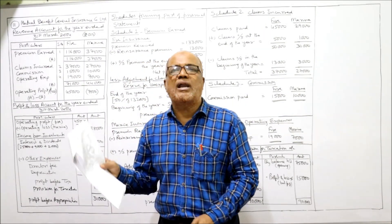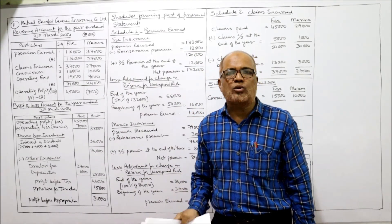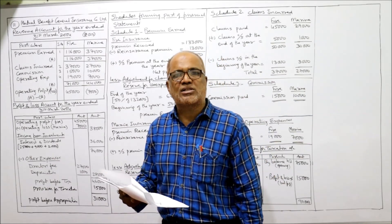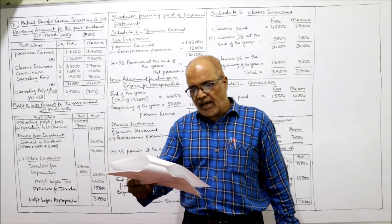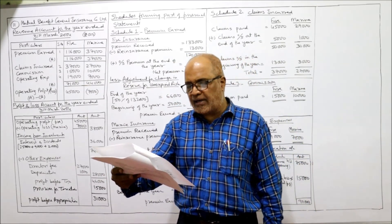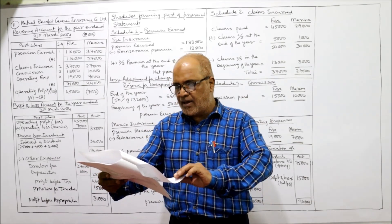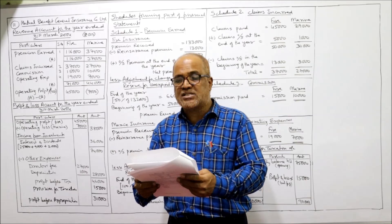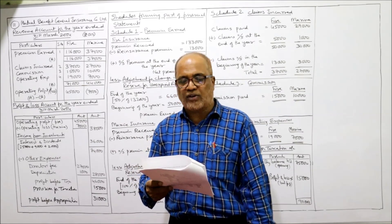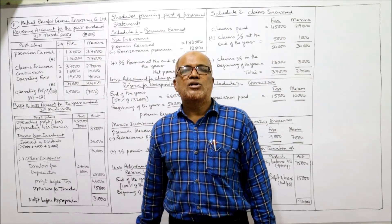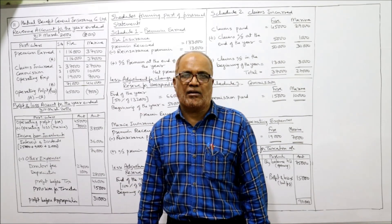I'm going to start the last and final problem — problem number 11. Before starting, I expect my viewers to have a printout of the problems given in the link under my description. The problem states: the accounts of Mutual Benefit General Insurance Company Limited have extracted a few items from the trial balance and requested you to prepare the necessary accounts in statutory form to disclose the profit and loss for the year.